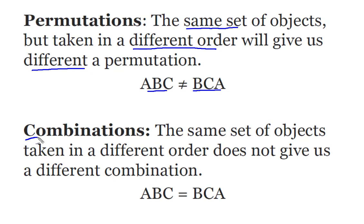On the other hand, combinations: I take the same set of objects, I put them into a different order, but it does not give me a new combination. We consider A, B, and C, and B, C, A to be the same thing. In combinations, this will give you one group, and in permutations, this will give you two different arrangements.